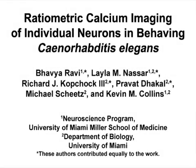The overall goal of this procedure is to perform ratiometric calcium imaging of the effects of hermaphrodite-specific neuron, or HSN, activity on Caenorhabditis elegans behavior. This method can help answer key questions in the behavioral neuroscience field about how neural circuit activity produces changes in animal behavior as animals alternate between behavioral states. This technique allows changes in intracellular calcium activity to be recorded with a high signal-to-noise ratio while simultaneously tracking animal behavior and locomotion.